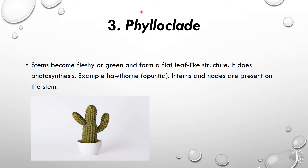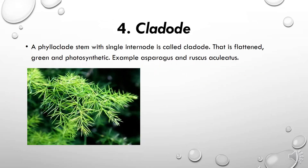Nodes are present on the stem. Cladode is a phylloclade stem with a single internode. It is flat, green, and photosynthetic. While the phylloclade is thicker, the cladode is thinner, has a single internode, is flattened and green, and is also responsible for photosynthesis. For example, asparagus.